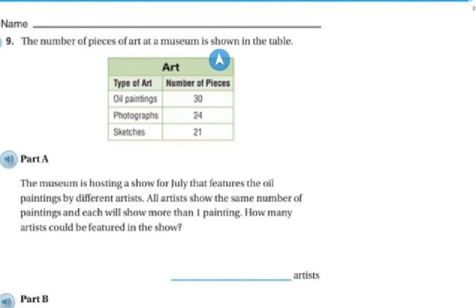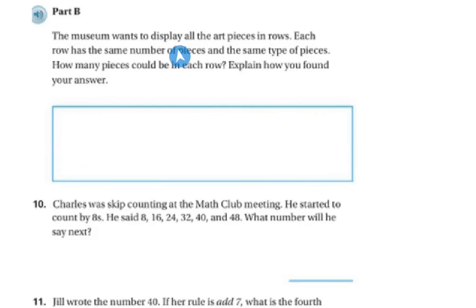The number of pieces at an art museum is shown on the table below. Oil paintings 30, photographs 24, sketches 21. The museum is hosting a show for July that features oil paintings by different artists. All the artists show the same number of paintings, and each will show more than one painting. How many artists could be featured in the show? The museum wants to display all the pieces in rows. Each row has the same number of pieces and the same types of pieces. How many pieces could each row have?